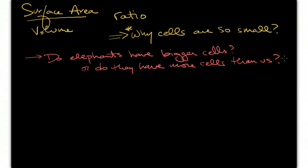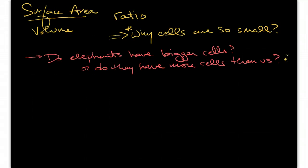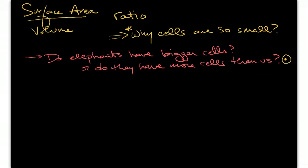I'll go ahead and direct you into this. It's the second question, that they have more cells than we do, because cell size has to remain small in order to be efficient.